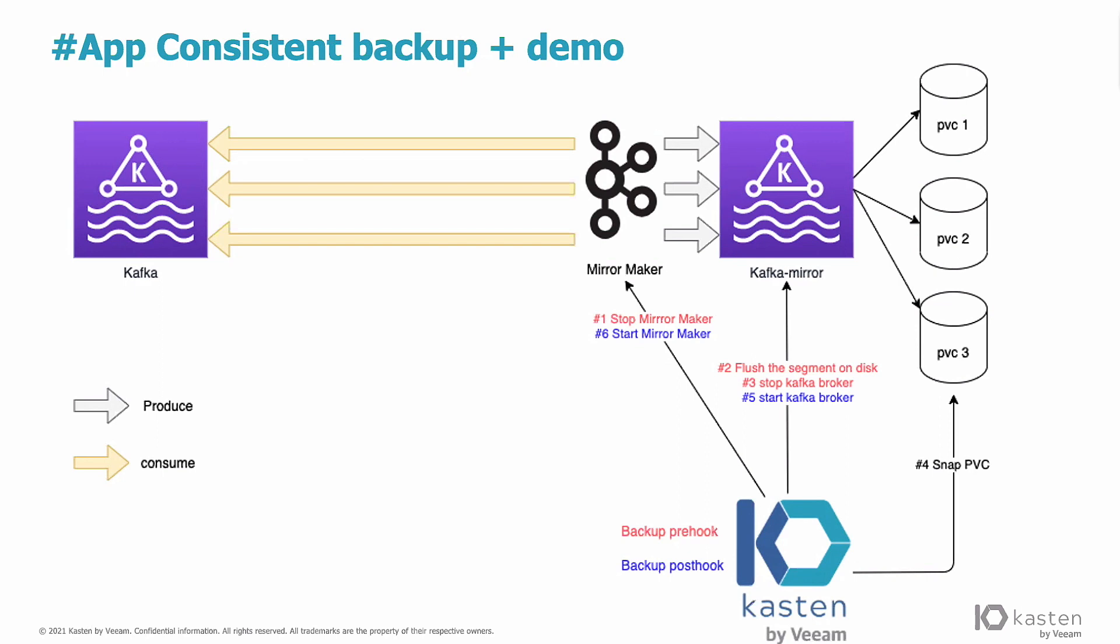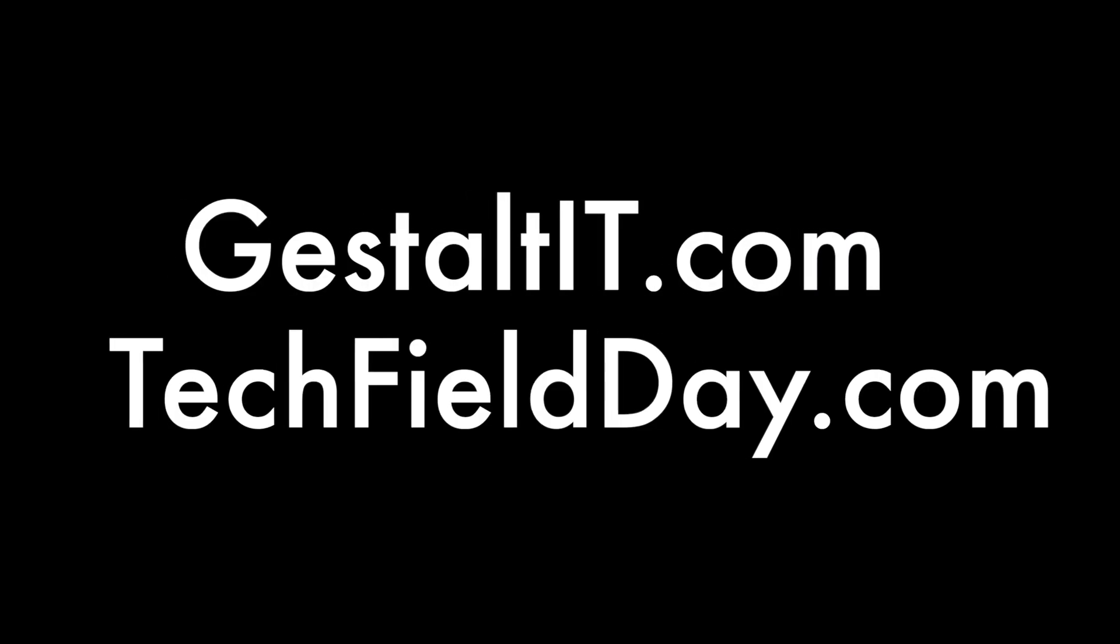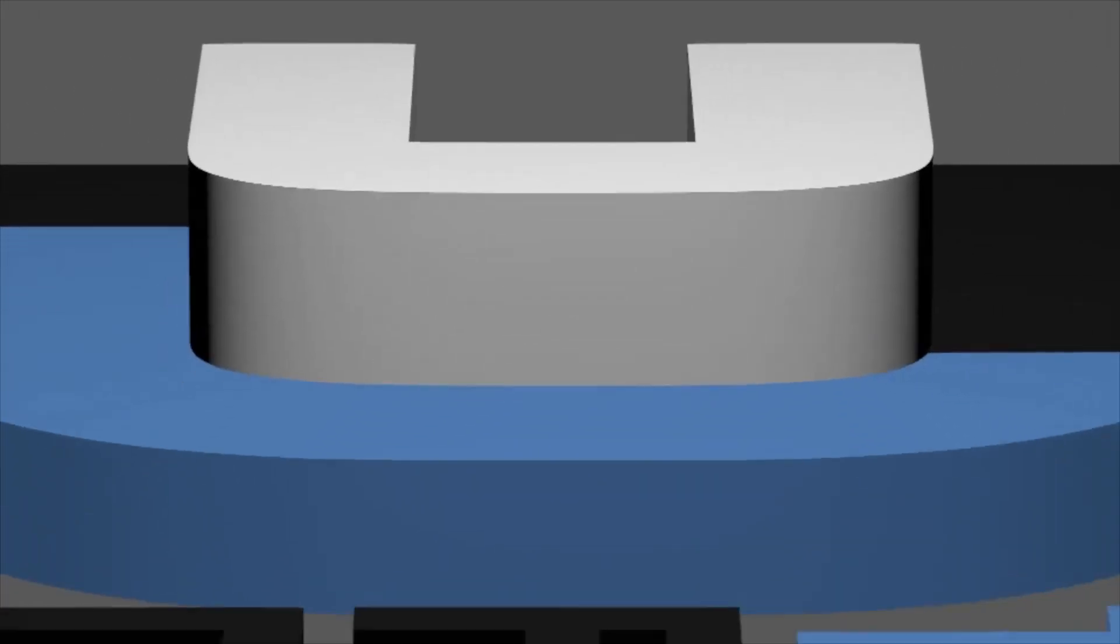And what we do? We implement a blueprint. And what the blueprint does: first thing, it stops mirror maker, which is stopping the production of any messages on the target cluster. Then it flushes the segment on the disk. It stops the Kafka broker. So we are 100% sure that everything is flushed on the disk properly. And then we do the snap of the PVC. And we restart the workload and we finally restart mirror maker.